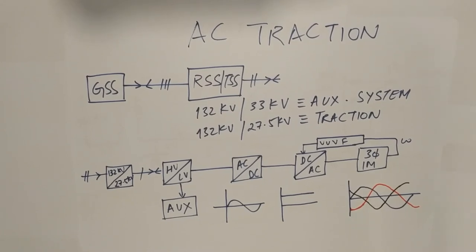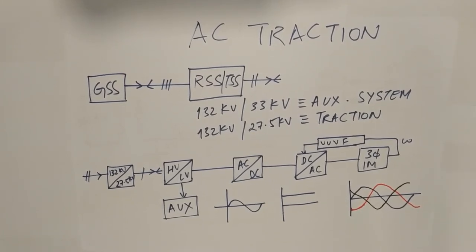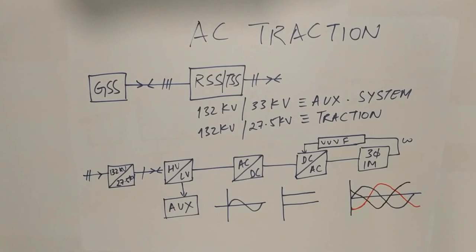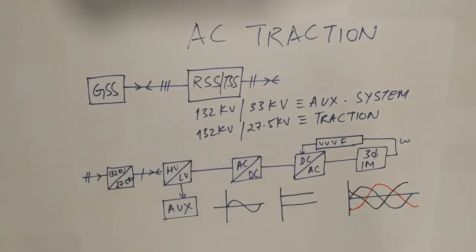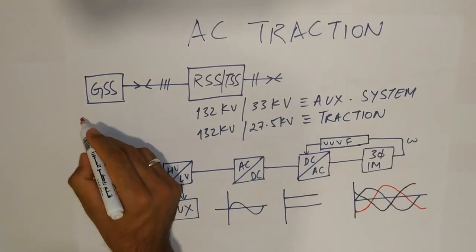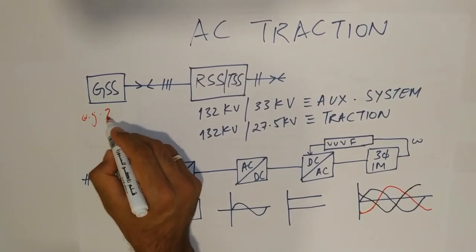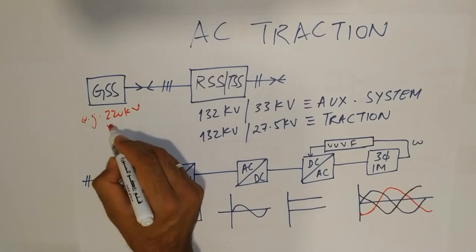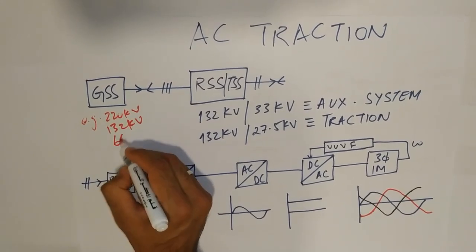First we will understand how the power enters into our traction substation. So the power flows from a grid substation which is nearby. And this voltage at grid substation is either 220 KV, 132 or 66 KV.